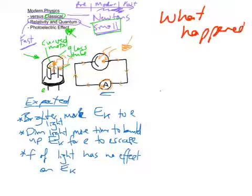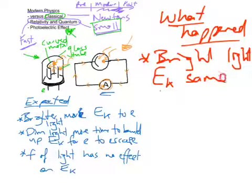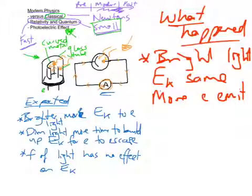What actually happened was that brighter light didn't affect the energy of electrons. So bright light left EK the same, kinetic energy the same. But what did happen was more of them, more electrons emitted. So brighter light made more electrons emit.